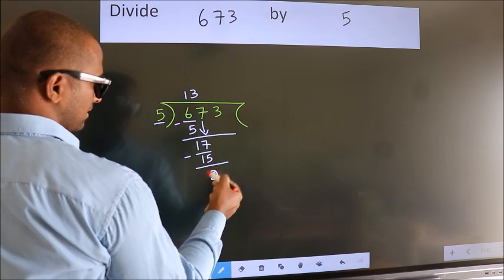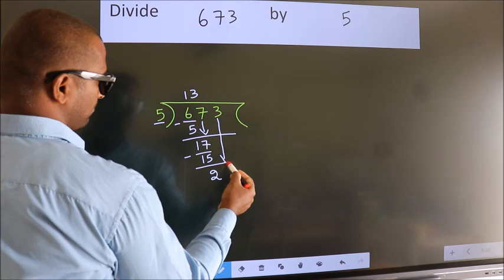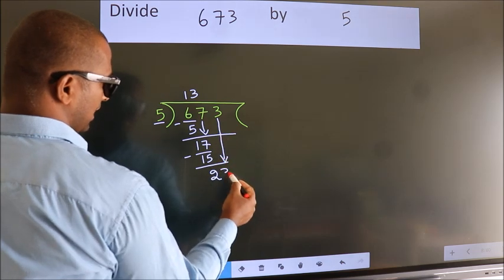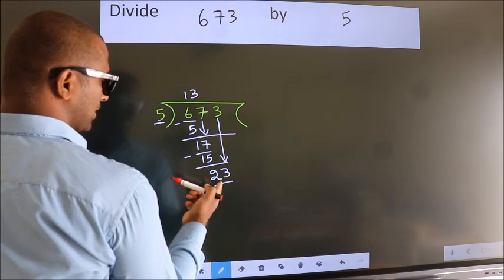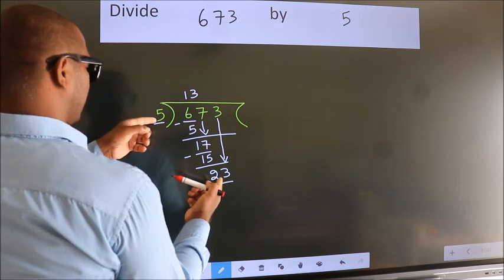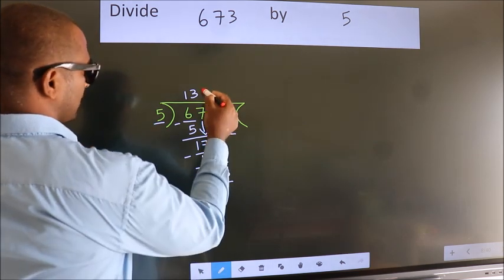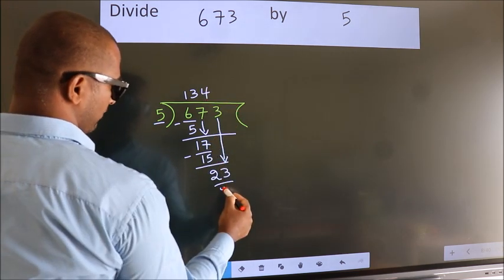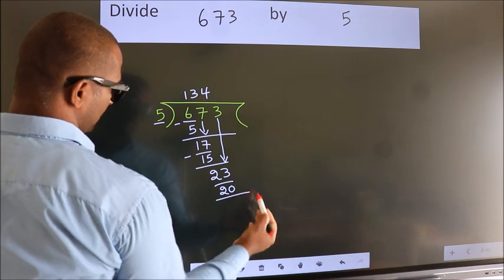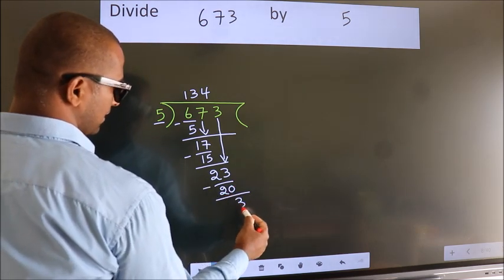After this bring down the beside number. So 3 down. So 23. A number close to 23 in 5 table is 5 fourths 20. Now we subtract. We get 3.